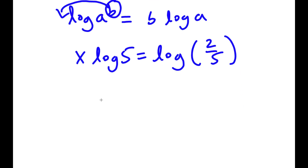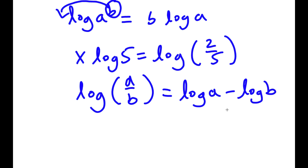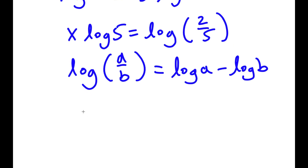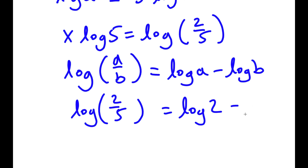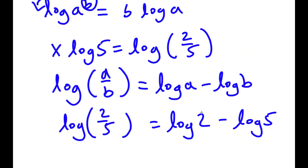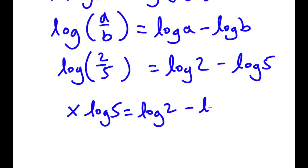Another property of logarithms is that if I have something in the form log a over b, this is equal to log a minus log b. So right here, log of 2 over 5 is going to equal log 2 minus log 5. So now, putting it all together, I get x times log 5 is equal to log 2 minus log 5.